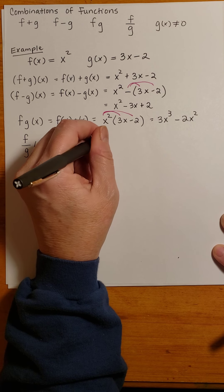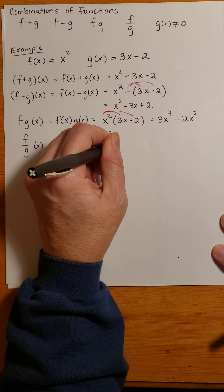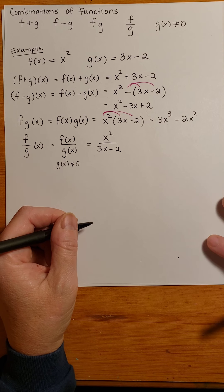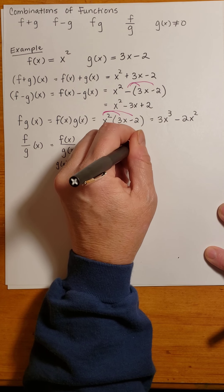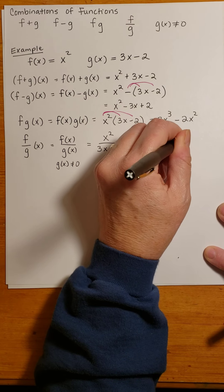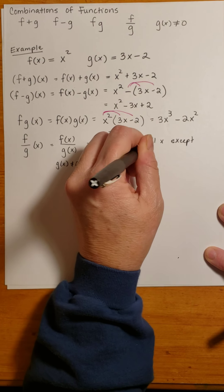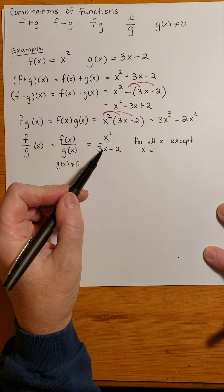So we take our function f(x), which is x², and divide it by 3x - 2. And this is going to be true for all x except x equal to - I'm sorry - 2/3.